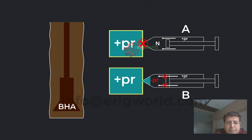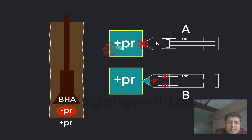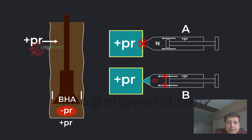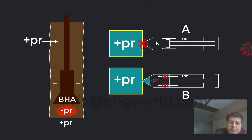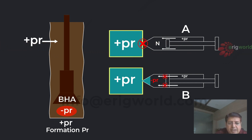In the wellbore, whenever I make an upward movement of the string or pick it up, a negative pressure is created. The formation pressure outside and the fluid in the annulus act as positive pressure. When I pick up the string, the vacuum created behind or below the bit is neutralized by this annulus fluid — similar to syringe A. If the annular gap is sufficient, fluid from the annulus comes down and neutralizes the suction effect, so formation fluid has no chance to enter the wellbore.